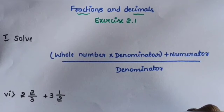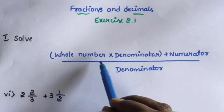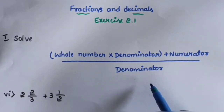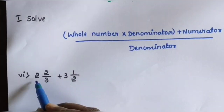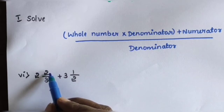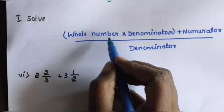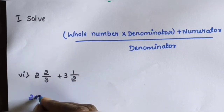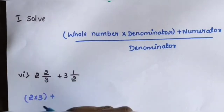This is a mixed fraction. Then convert the mixed fraction into an improper fraction using this formula: whole number into denominator plus numerator, divided by denominator. Here 2 is the whole number, 2 is the numerator, and 3 is the denominator. So: 2 into 3 plus 2, divided by 3.